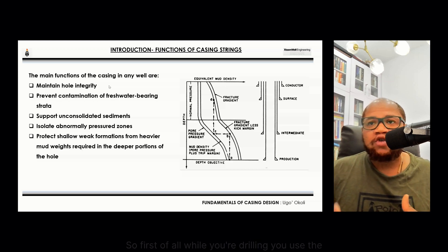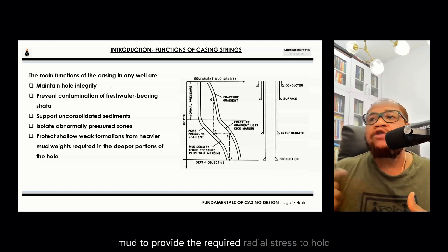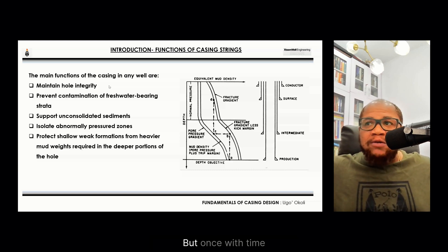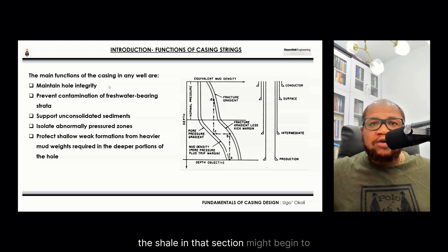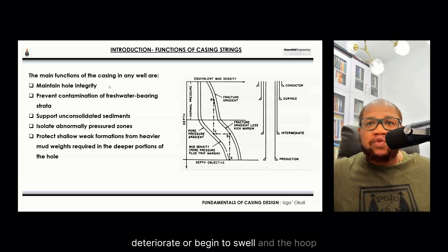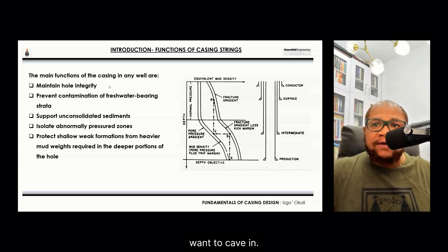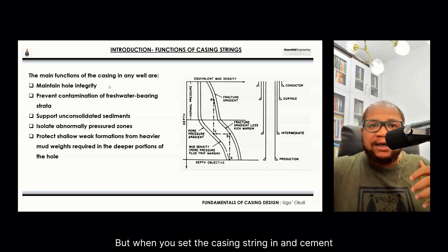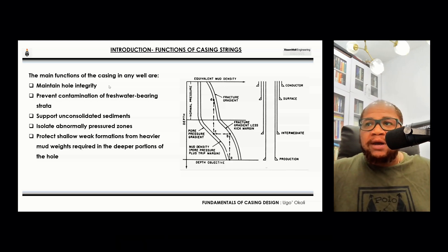Once you start drilling, there is a tendency for the wellbore to collapse inwardly — that's what we call hoop stresses. While drilling, you use mud to provide the required radial stress to hold the wellbore from collapsing. Over time, shales in that section may begin to deteriorate or swell and hoop stresses will increase, causing the wellbore to want to cave in. When you set the casing string and cement it, you permanently place a structure that holds and keeps the wellbore solid.